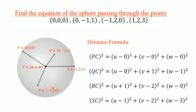Since all four points lie on the surface of the sphere and C is the center, all these distances are equal: CP = CQ = CR = CS. All these points are at distance r — the radius — from the center of the sphere.